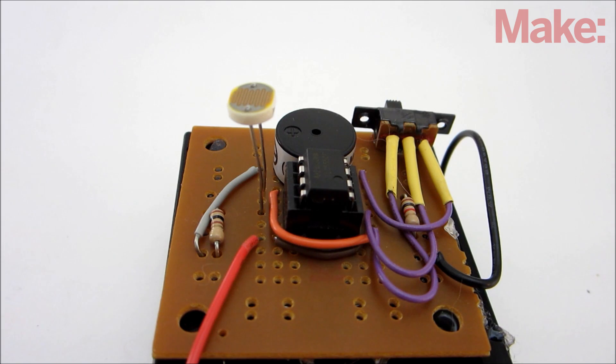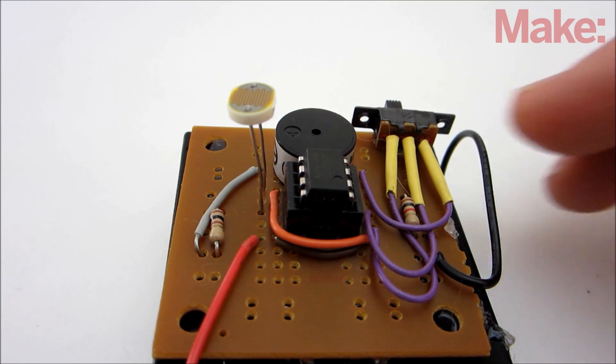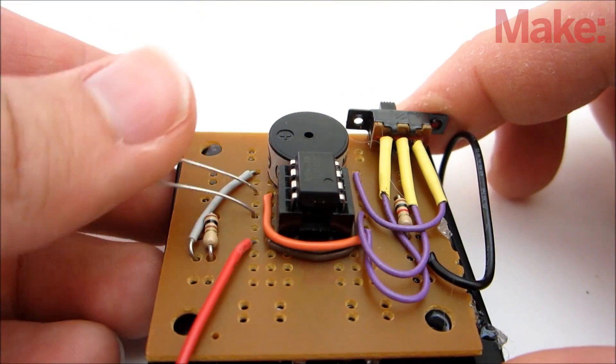I mounted the photoresistor so that it sticks out about an inch from the board. That way you can adjust its position after mounting it.